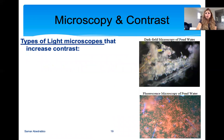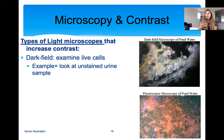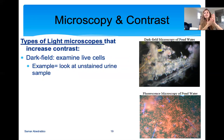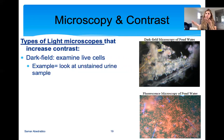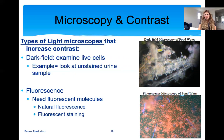Two types of light microscopes that increase contrast are dark field microscopy and fluorescence microscopy. Dark field microscopy: if you have a transparent organism and you put a dark background, you can suddenly see it. If I have a white background and put something white on it, I won't see it; but if I have an organism on a dark background, I can. Dark field microscopy is excellent for looking at transparent organisms without staining them — all you do is put a dark background.